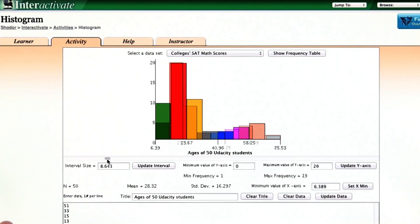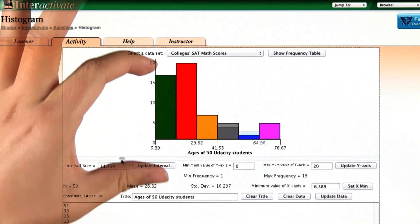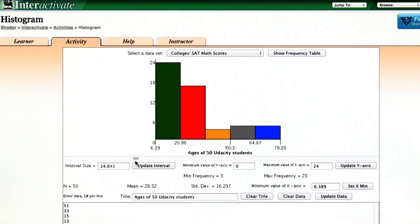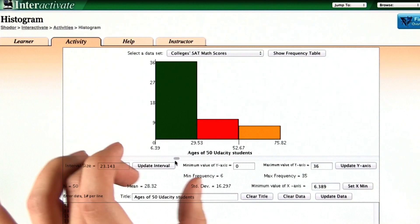So here, we're getting bigger and bigger bins, and you see that there are more observations now within each interval. If we keep making the bin size bigger and bigger, eventually it gets kind of hard to see the shape of the histogram, because the bin sizes are too big.